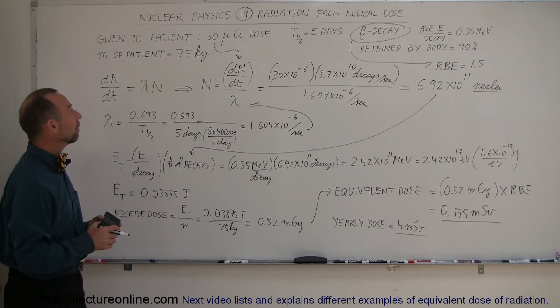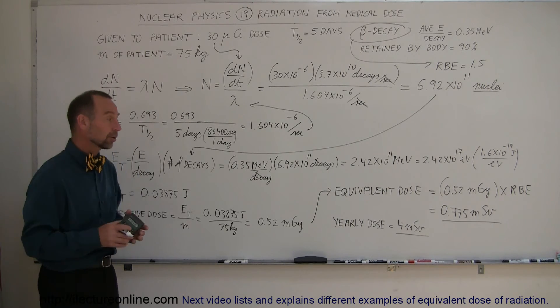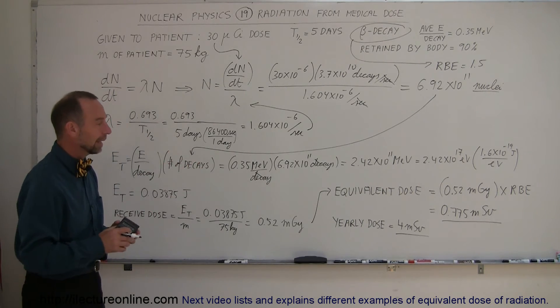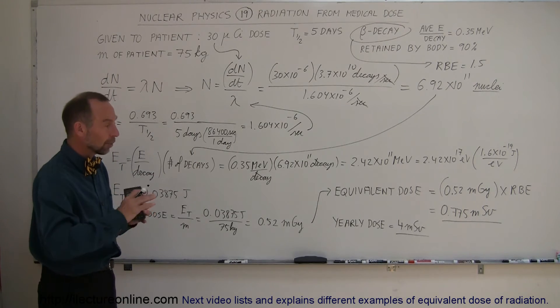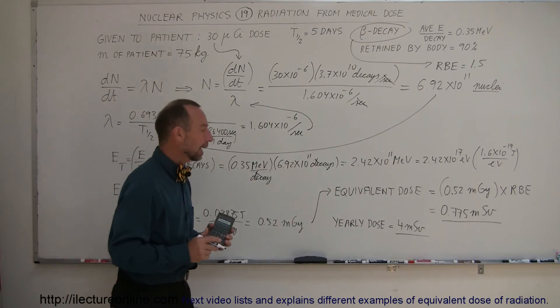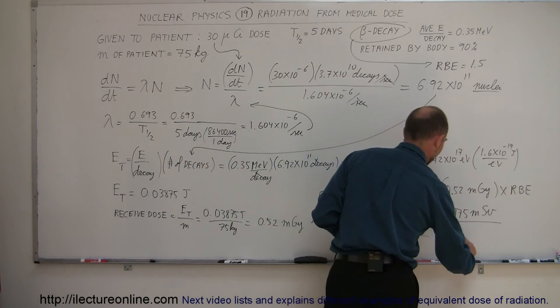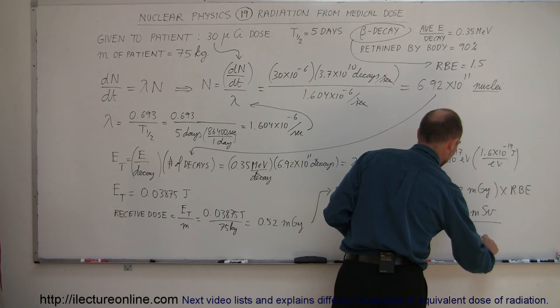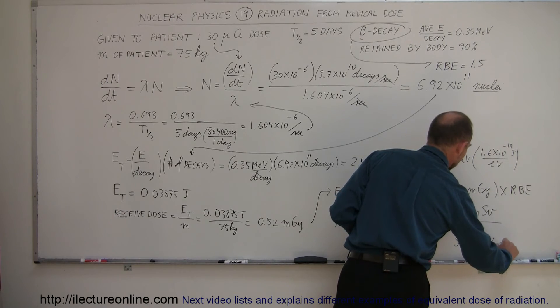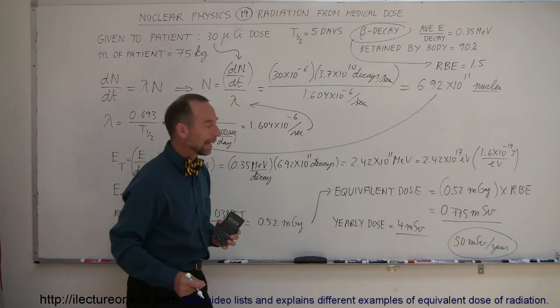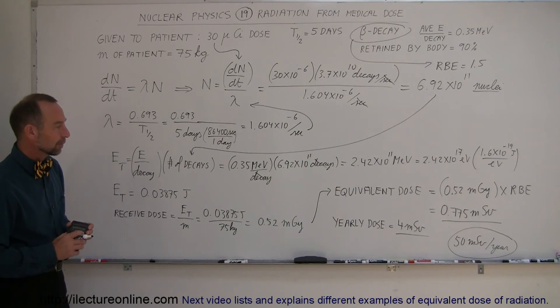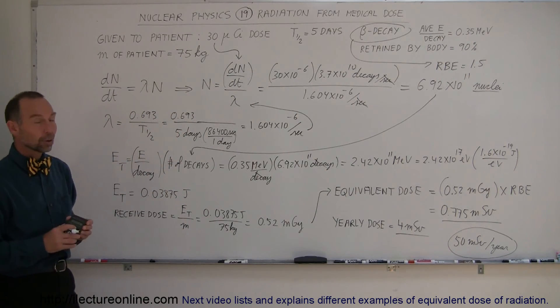And if you need this particular medical treatment, you would be advised to go ahead and undergo that treatment. Just to make sure that you understand the relative aspect of that, you can safely receive 50 millisieverts per year without any consequences whatsoever. So you can see this is well below any safety limit that was set by the United States government. So don't worry about it, get the medical treatment, and you'll be all right.